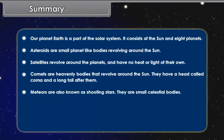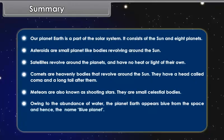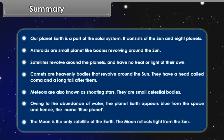Meteors are also known as shooting stars. They are small celestial bodies. Owing to the abundance of water, the planet Earth appears blue from the space and hence the name Blue Planet. The Moon is the only satellite of the Earth. The Moon reflects light from the Sun.